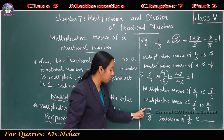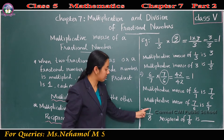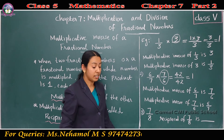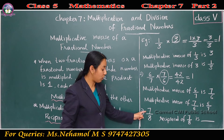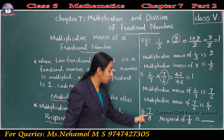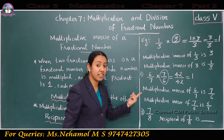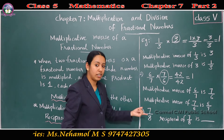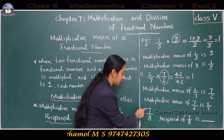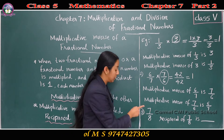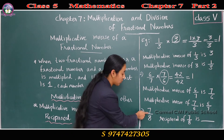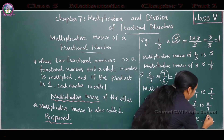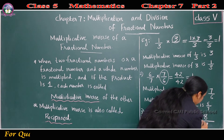Consider another number: 7/8. What is the reciprocal of 7/8? To get the reciprocal, we have to change the numerator as denominator and the denominator as numerator. So the reciprocal or multiplicative inverse of 7/8 is 8/7.